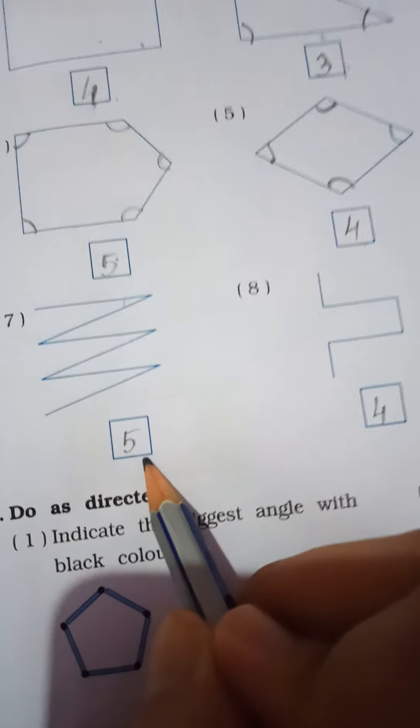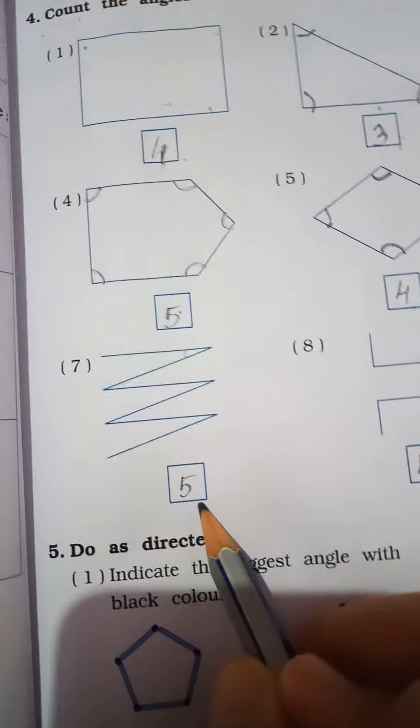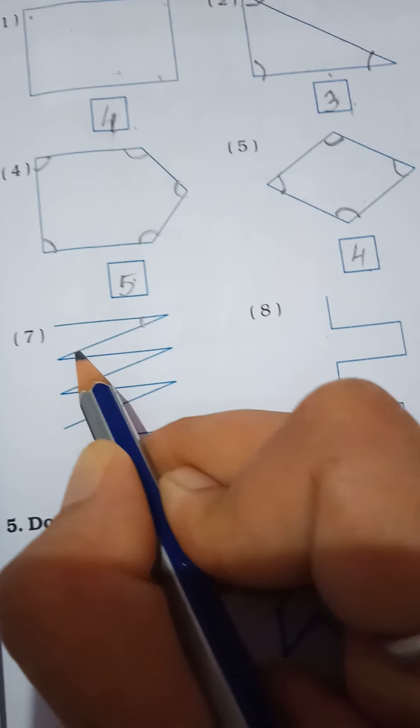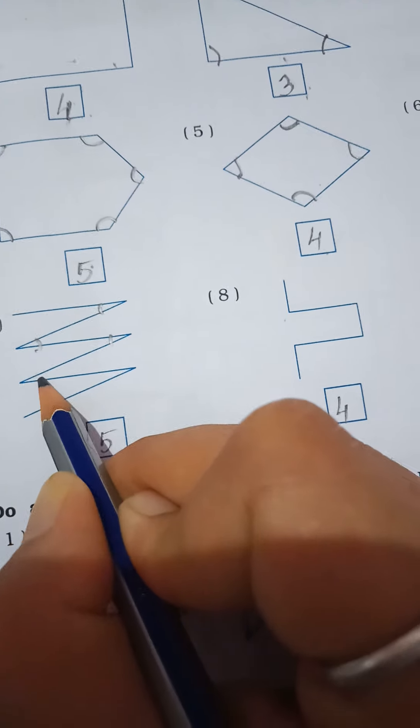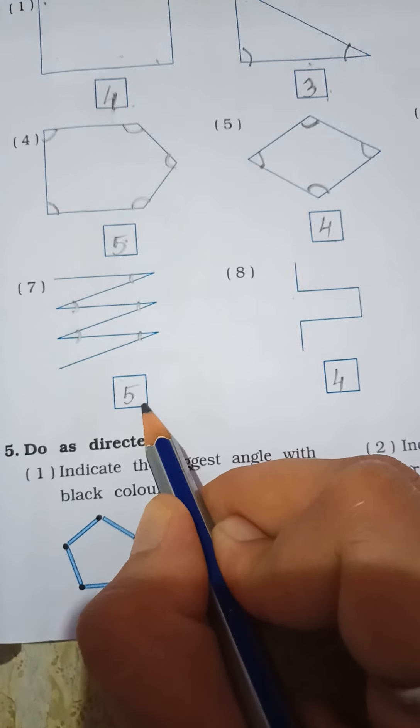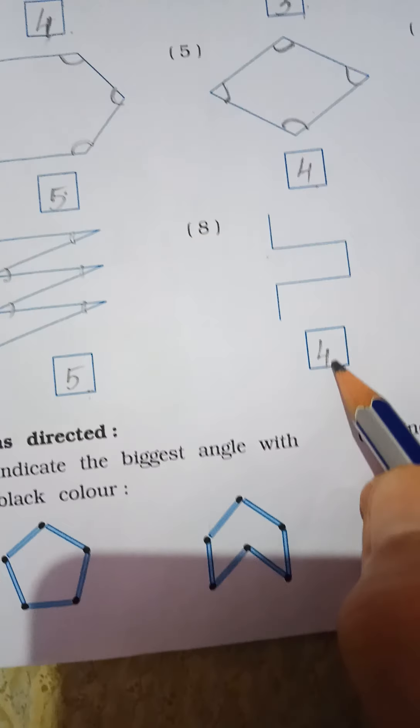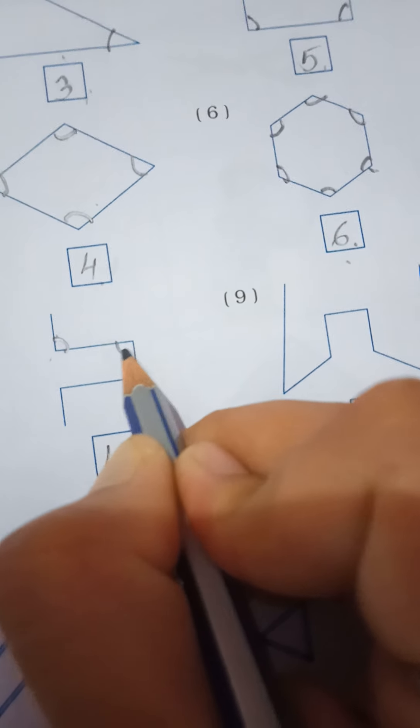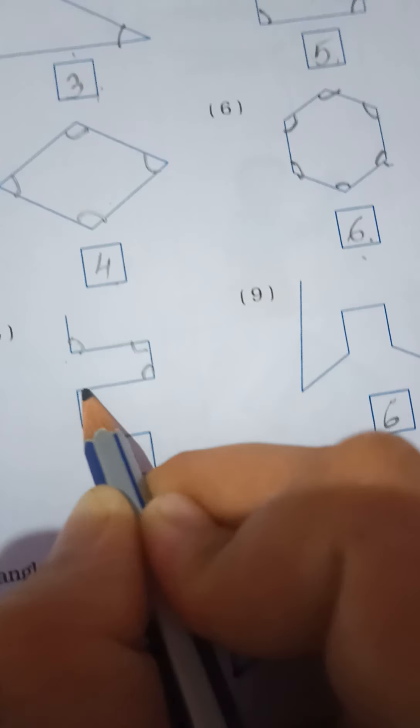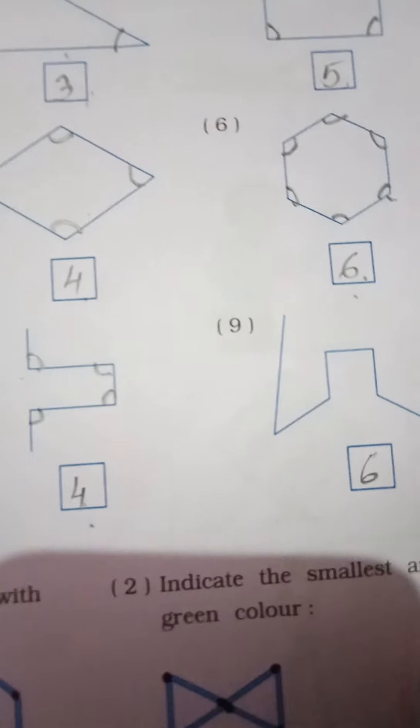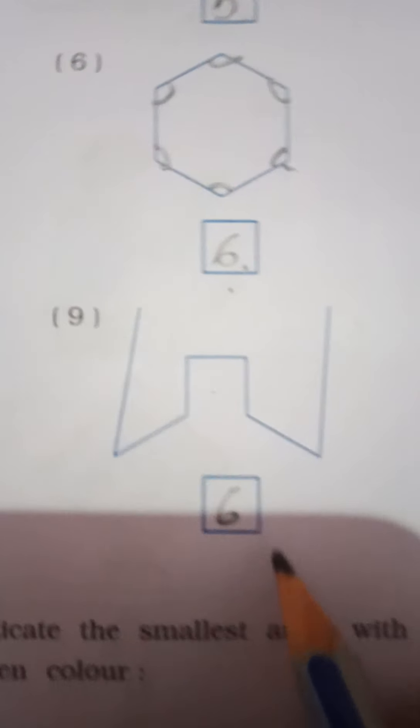See here, how many angles we have to find. We will see here. Two, three, four, and five. This is five. So this is called pentagon. Here, how many angles? One, two, three, and four. How many? Four. Okay student. Now see here, the last one.